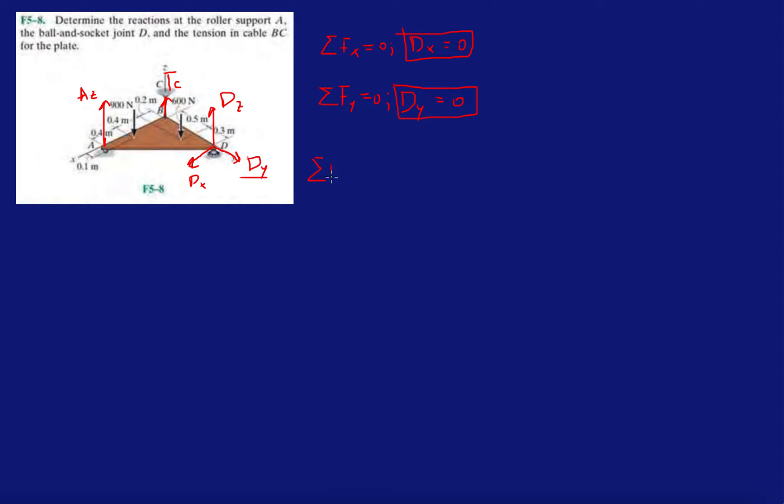Now let's do F of Z, forces in the Z direction. We have all the forces pointing up: AZ, TC, and DZ. We know DX and DY are zero, so they're not there. Then we have minus 900 and minus 600. That's equal to zero. So one equation, three unknowns. We need to do moment equations.